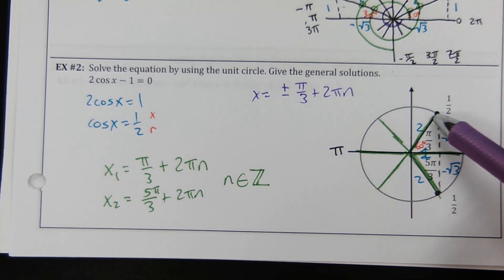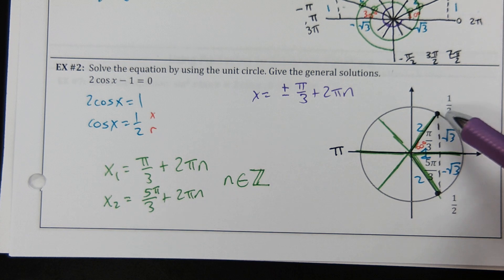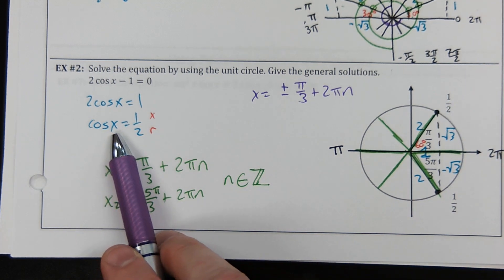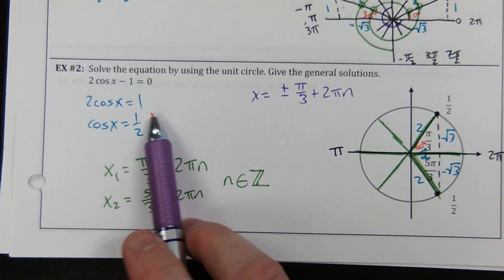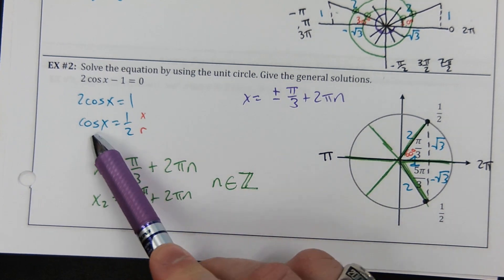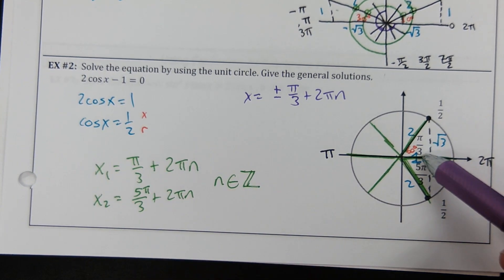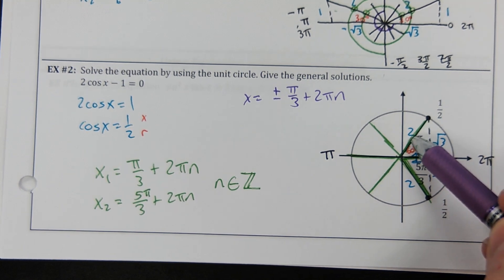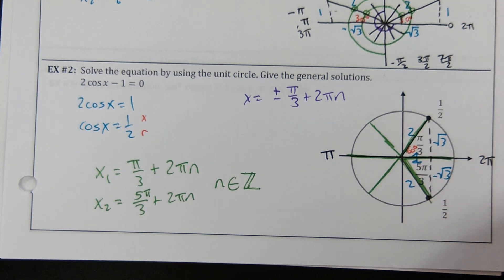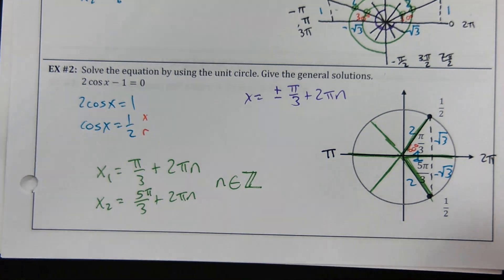One clarification: the x in 'cosine x' is angle x, not side-length x. Think of it as theta. The x inside the trig function represents an angle — the argument of the trigonometry — not the horizontal coordinate. So x₁ = pi/3 radians means the angle is pi/3, not that the horizontal side length is pi/3.